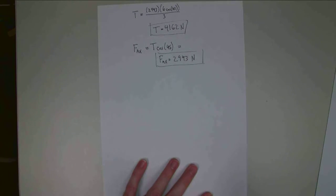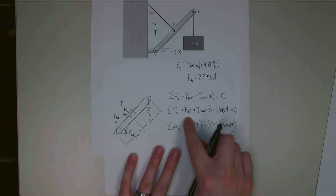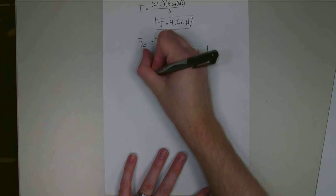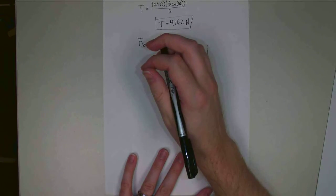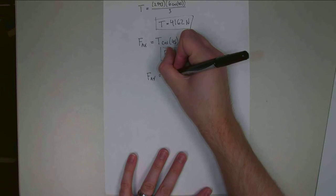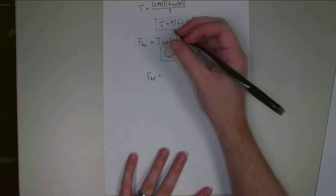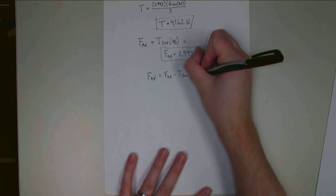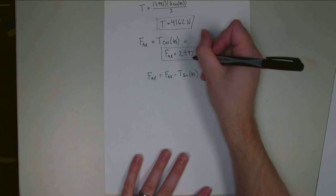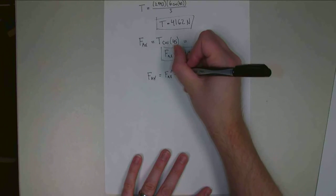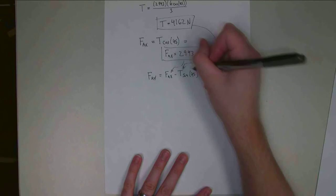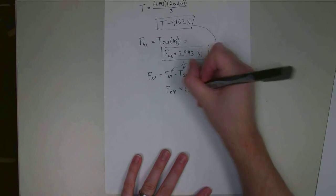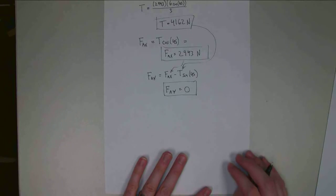There's FAX, now FAY. I'm going to plug in my value for T into this sum of forces in the Y equation and solve for FAY. If I do that, I get FAY. I'm going to rearrange this. It's going to be equal to the tension force, or sorry, the FAX minus the tension force times sine of 45. FAX is this 2,943. That goes in here. Tension force goes in here. And FAY turns out to be 0. So there is no force in the Y direction at that pin joint in this particular case.